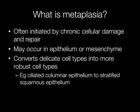Metaplasia is often initiated by chronic cellular damage and repair. It may occur in epithelium or mesenchyme and it converts a delicate cell type into a more robust cell type. An example is the ciliated columnar epithelium of the bronchi being converted to stratified squamous epithelium.